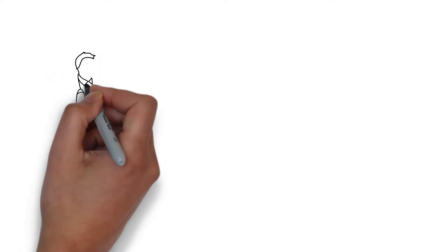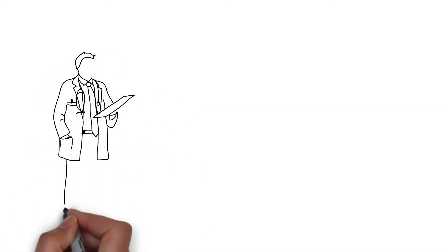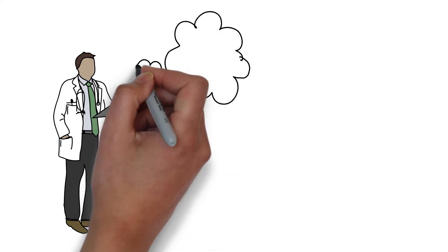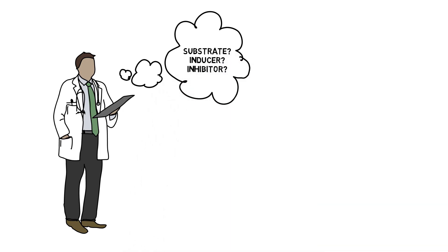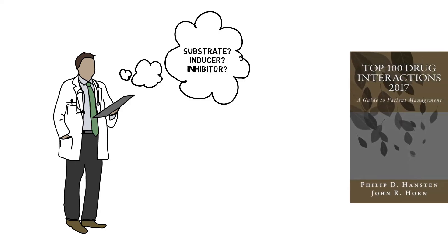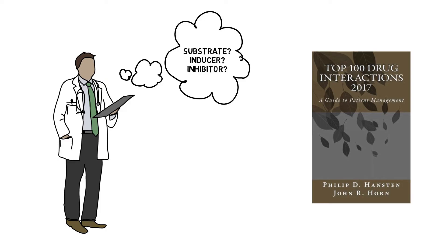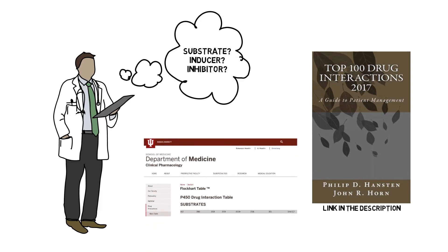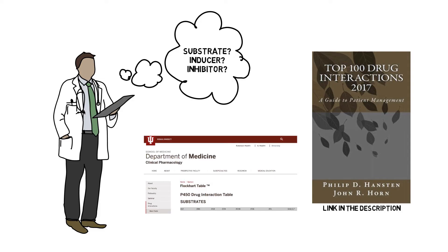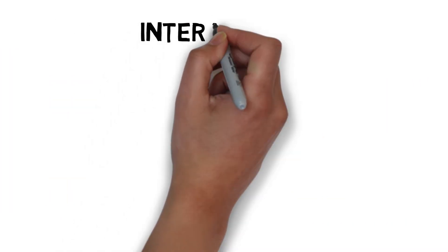In my opinion, whenever you start medication, you need to know if your drug is a substrate, inducer, or inhibitor of a certain CYP enzyme, and review your patient's list of medication for this possible interaction. A good source is the book called The Top 100 Drug Interactions — link in the description. The online resource I use is the Flockhart table by Indiana University; I'll provide a link in the description as well. This video would be endless if I list all possible interactions, but we'll go through a few notable ones.